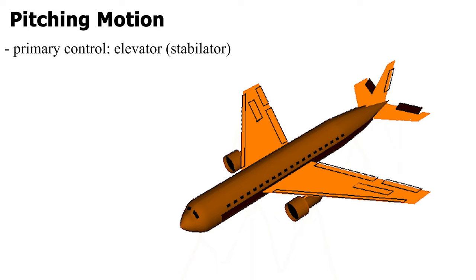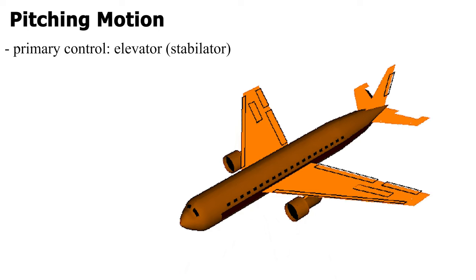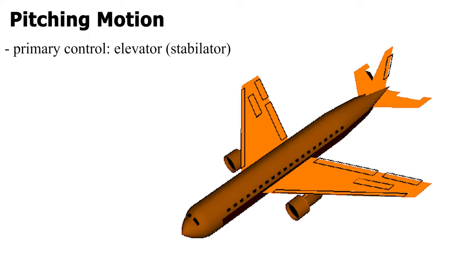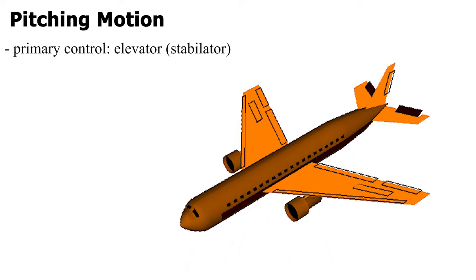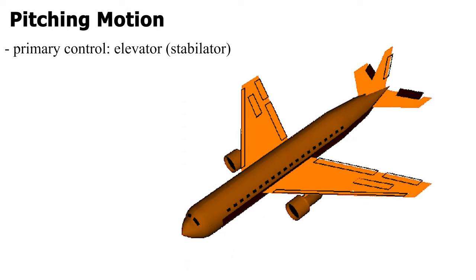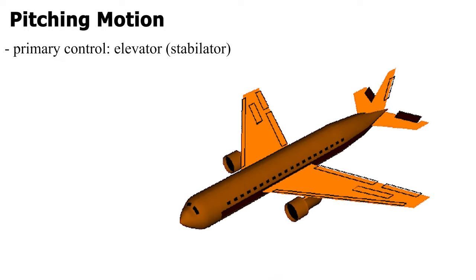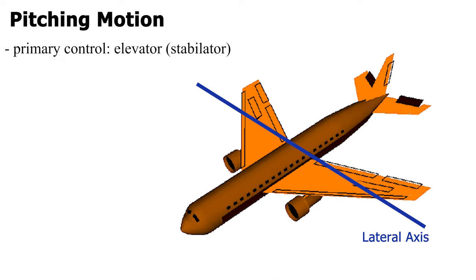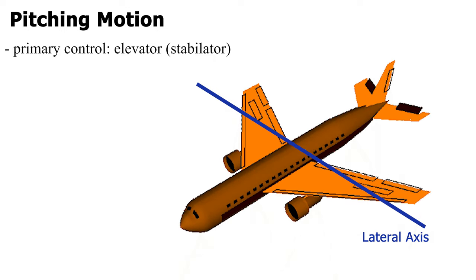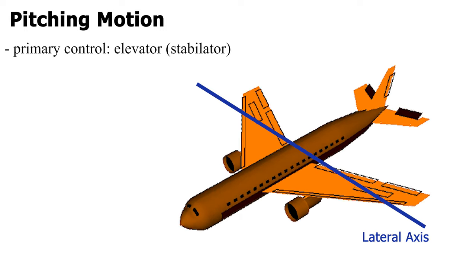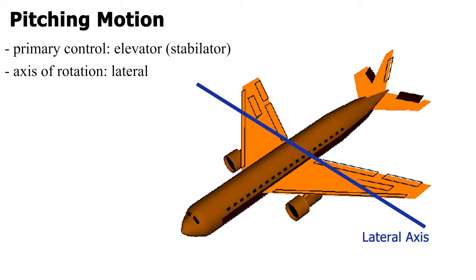The next primary flight control is the elevator or sometimes called stabilator. Elevators are small wings that can flap up and down on the airplane's tail like so. Stabilator controls the airplane's pitch. Pitching generates upward or downward movement of the aircraft. This happens along the lateral axis like so. Imagine a line going from one wing to another through the center of gravity of an aircraft. The pitching movement will involve rotation along it. Hence, the elevator provides pitching movement along the lateral axis like so.